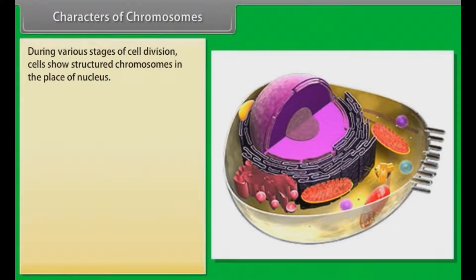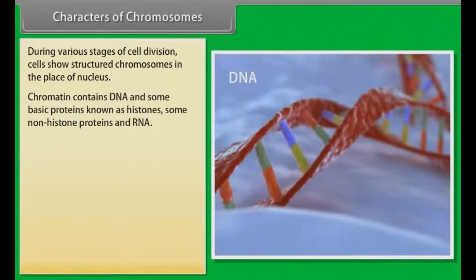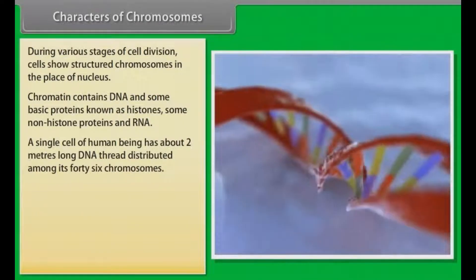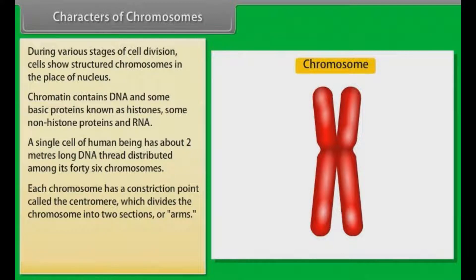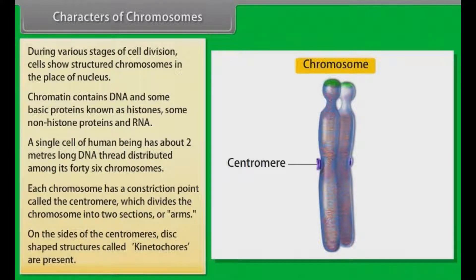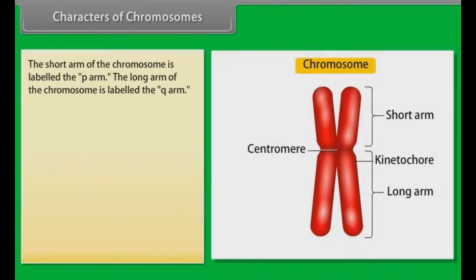Characters of chromosomes: During various stages of cell division, cells show structured chromosomes in the place of nucleus. Chromatin contains DNA and some basic proteins known as histones, some non-histone proteins, and RNA. A single cell of a human being has about 2 meters of long DNA thread distributed among its 46 chromosomes. Each chromosome has a constriction point called the centromere, which divides the chromosome into two sections or arms. On the sides of the centromere, disc-shaped structures called kinetochores are present. The short arm of the chromosome is labelled the P-arm.